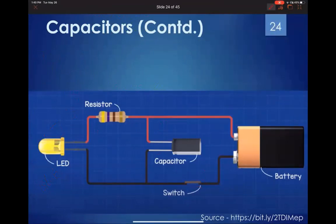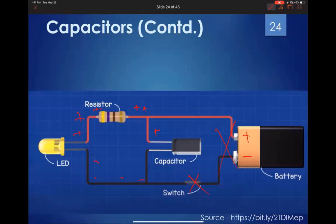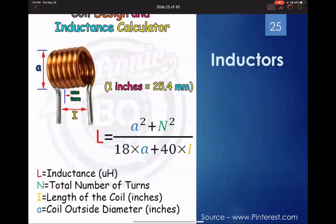If you disconnect the battery while a capacitor is in the circuit, the LED will stay on briefly. Using the water analogy: the storage tank still had water in it, so the capacitor — already charged by the battery — continues to supply current to the LED. Eventually, when all the stored charge is released, the LED will go off.